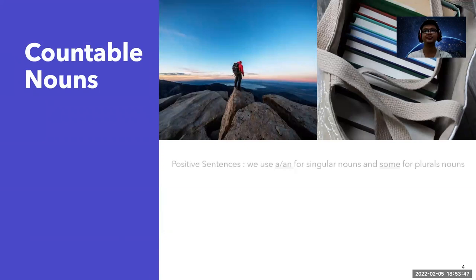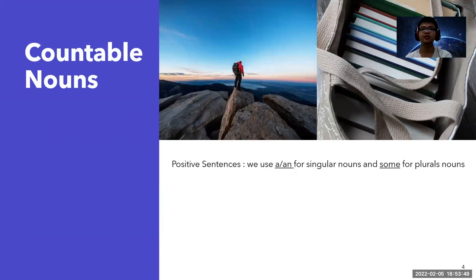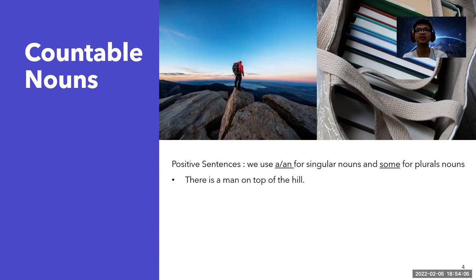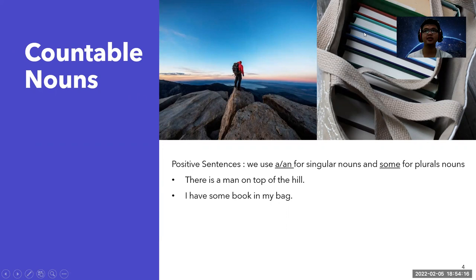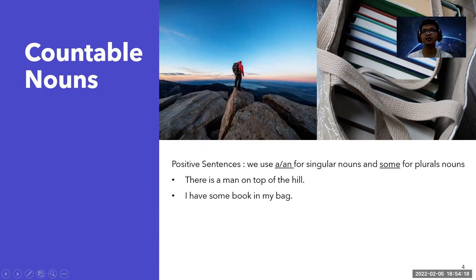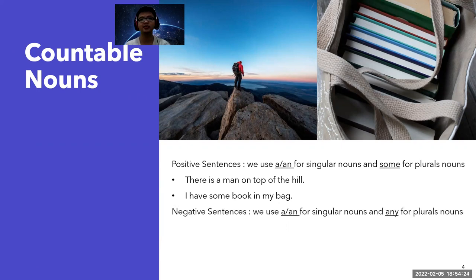For countable nouns in positive sentences, we use 'a' or 'an' for singular nouns, and 'some' for plural nouns. For example: 'There is a man on top of the hill' — we can count the people, there is one. And: 'I have some books in my bag' — you can see here we can count the books.